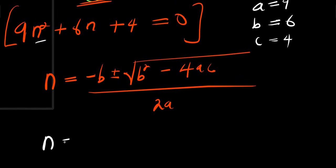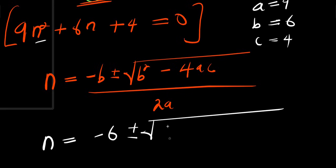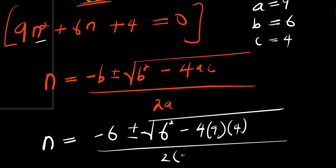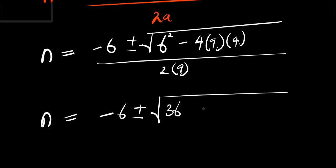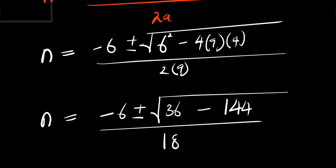So from here we have n equals negative 6 plus or minus square root of b² minus 4ac, divided by 2a. That gives us: square root of 36 minus 4 times 9 times 4, which is 36 minus 144, giving us negative 108, divided by 18.